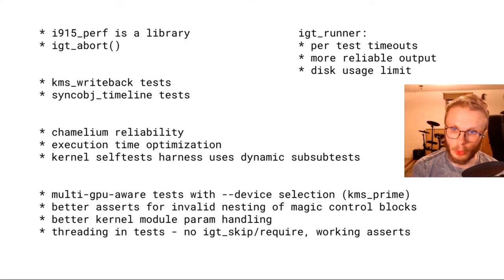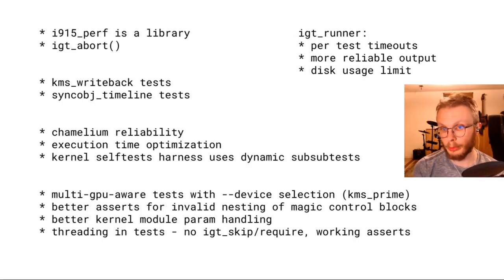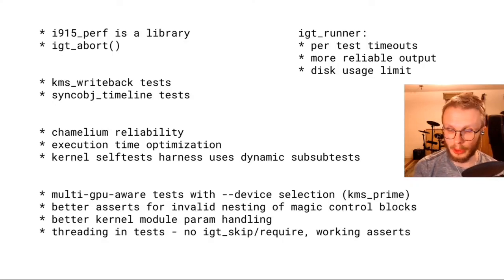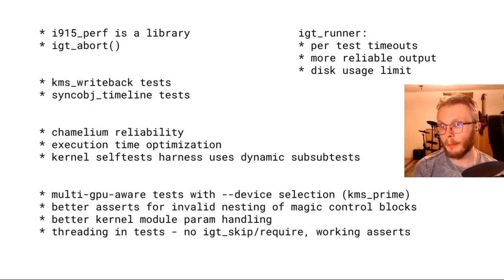We have better kernel module param handling — some tests want to override kernel parameters, and we now have a generic framework that lets you store the original kernel settings, mangle them, do some testing, and restore the original state. We also fixed threading in tests: asserts from threads launched inside tests were causing very weird failures. Now it's safe to use asserts inside threads, and igt_skip and require are not allowed inside threads — we assert on those using the standard assert to exit early.